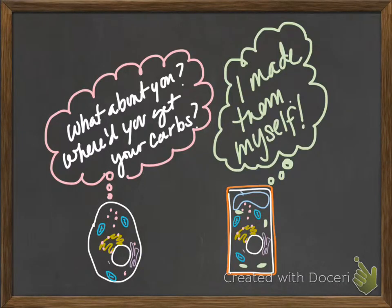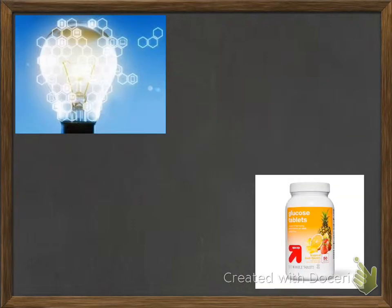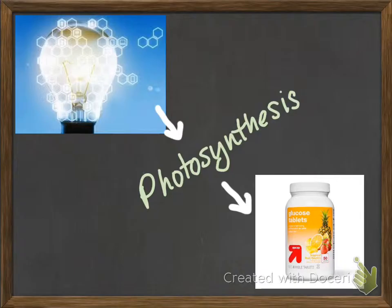Those organisms are called autotrophs. "Auto" meaning self, and "troph" referring to things like trophic levels, feeding, and energy. We know that autotrophs are capable, on their own, of taking light energy and converting it to glucose — the fuel that cells use to run the cellular respiration process and make ATP to fuel all their other activities. The process they use to turn sunlight into glucose? That'd be photosynthesis.